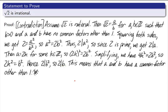This means that a and b have a common factor other than 1. That's a contradiction. So what we did was we contradicted the fact that the fraction could be written in simplest form. But every fraction can be written in simplest form. Therefore, the square root of 2 is irrational. And that's the end of our proof.